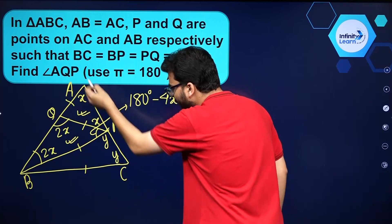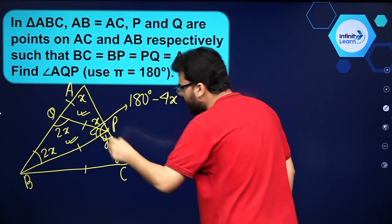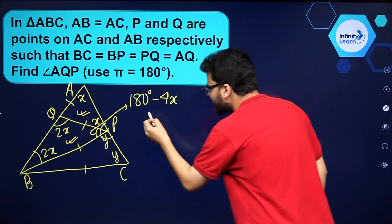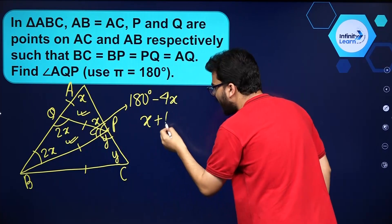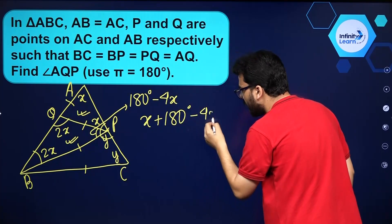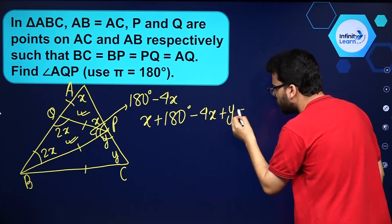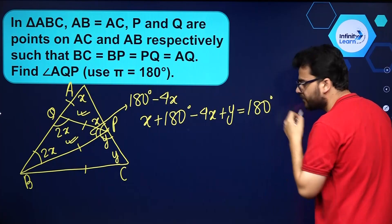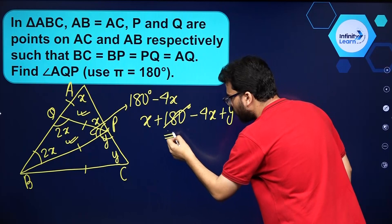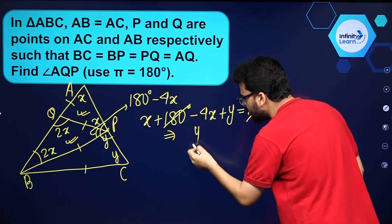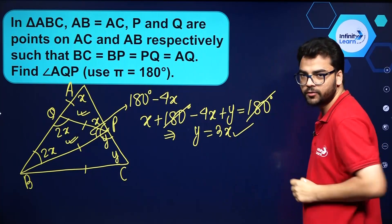Now AC is a straight line, so the sum of these angles will be equal to 180 degrees. So I can say x plus (180 minus 4x) plus y equals 180. Cancelling 180 from both sides and simplifying, I get y is equal to 3x.